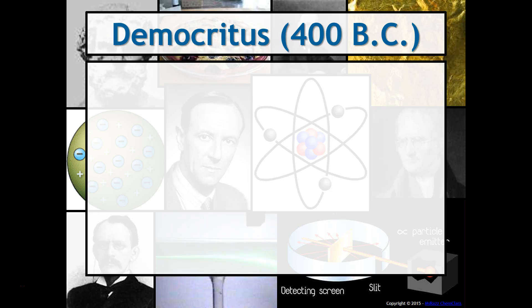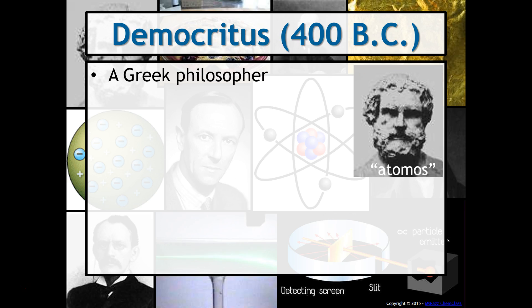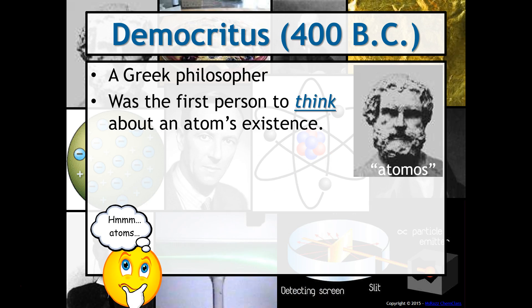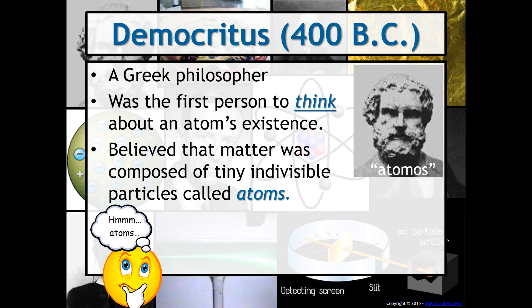Democritus was one of the first people to think about the existence of an atom. He was a Greek philosopher. Notice that I underlined the word think. So really what that's implying is that he had no experimental evidence, but he believed that matter was composed of these very tiny indivisible particles called atoms. Instead he called them atomos, which means indivisible.